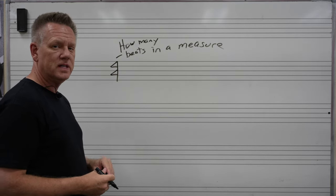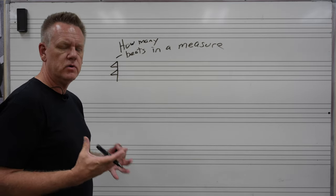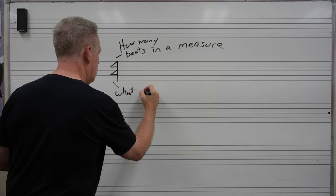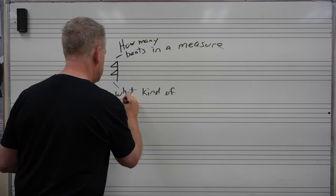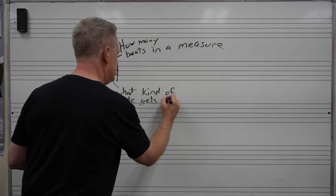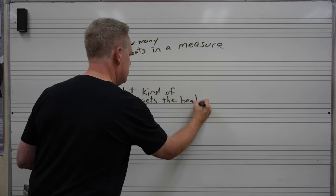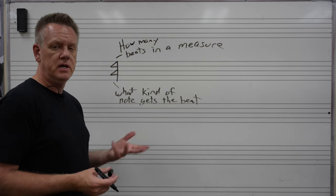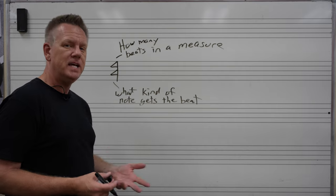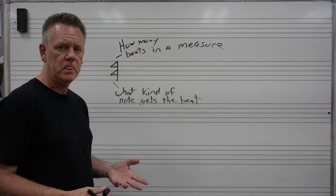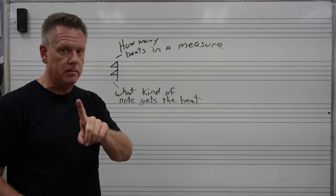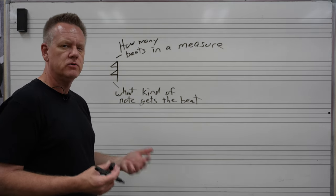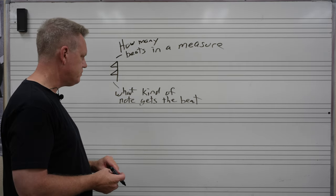Bottom 4 is telling us what kind of note, what kind of note duration, gets that beat. What kind of note gets the beat? And in this instance, since it's a 4, that means it's a quarter note. If it was a 2 on the bottom, it would be a half note. If it's an 8 on the bottom, it would be an 8th note. But in this instance, it's a quarter note because it's a 4. Top number - how many beats in a measure? Four. Bottom number, what kind of note duration gets the beat? The quarter note because it's a 4.